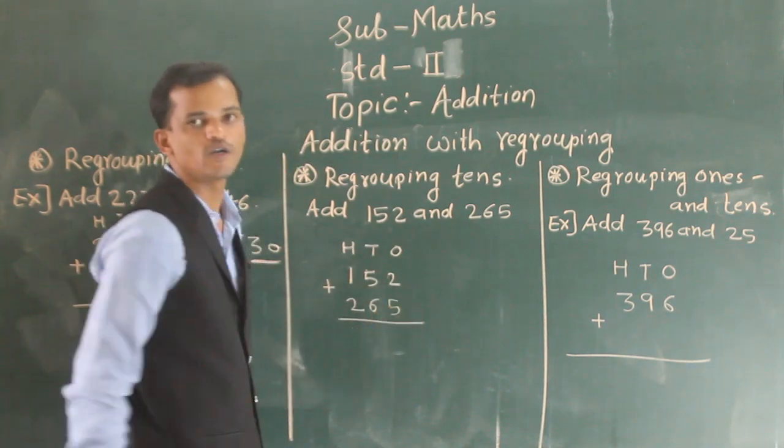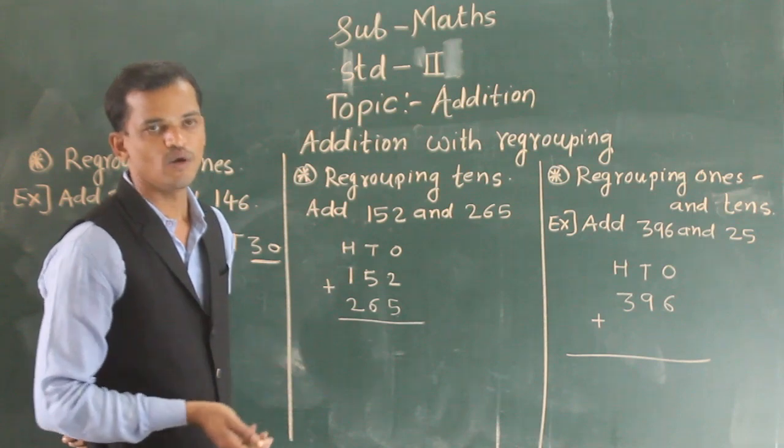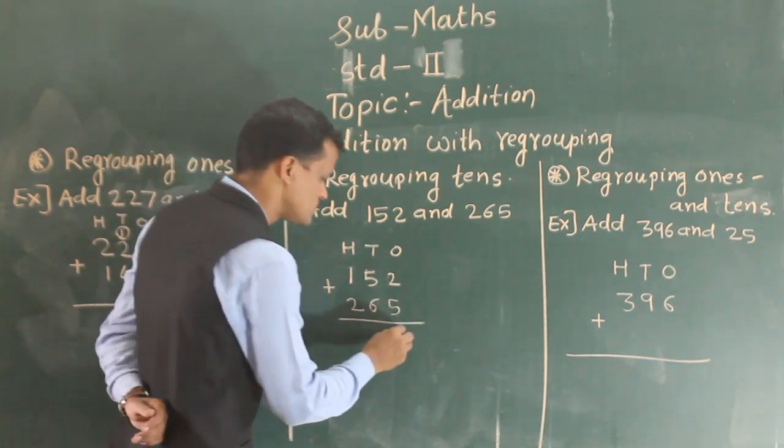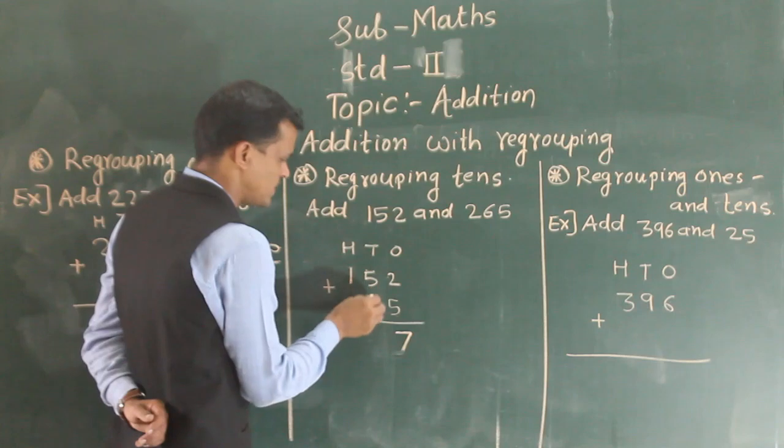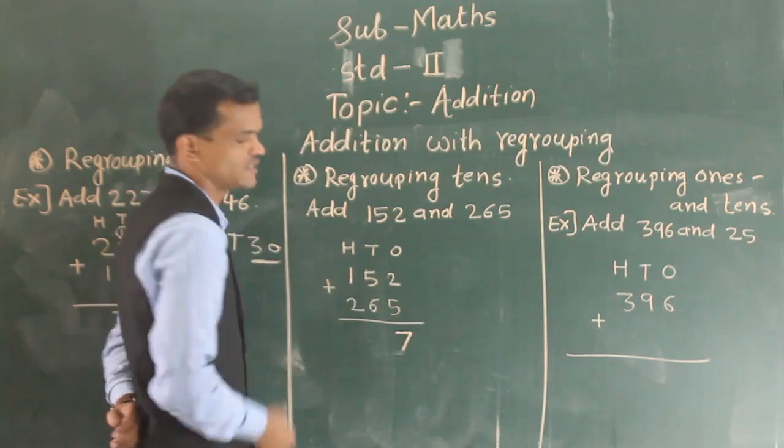So first write that numbers into column and then add and start from ones place. So here 2 plus 5, after 2, 5 fingers, count forward, so 2 plus 5, 7.